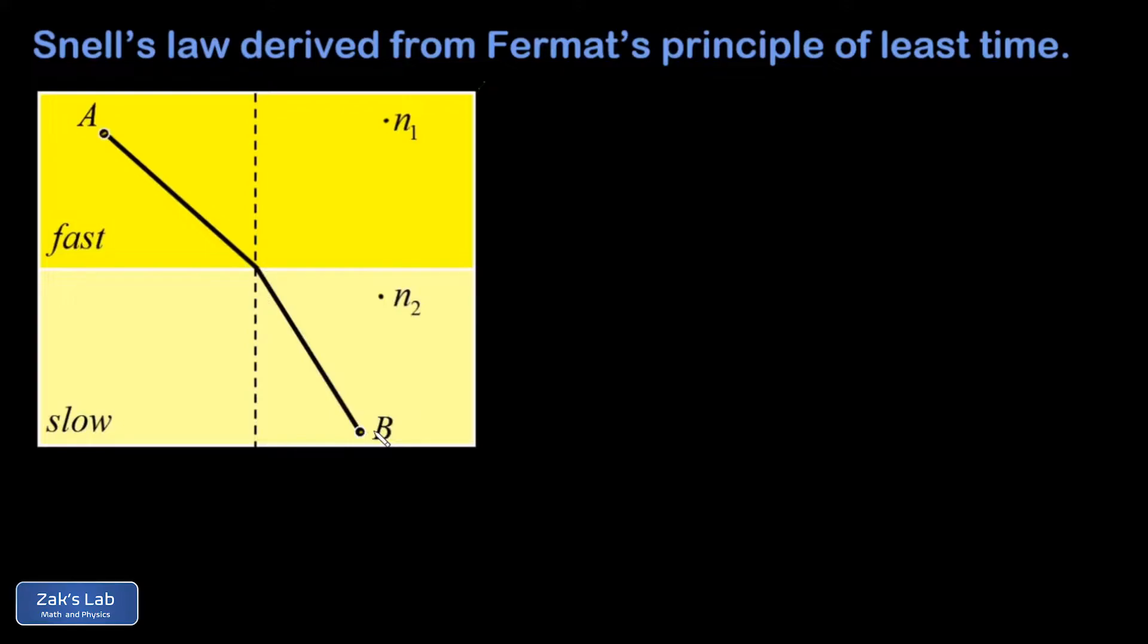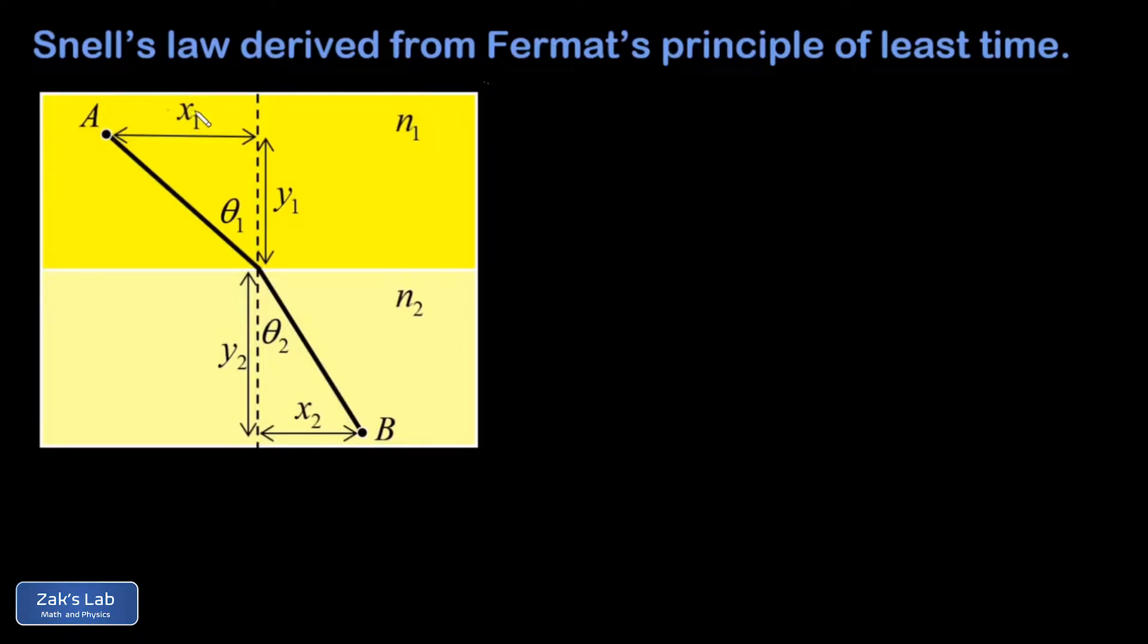To start to get a grip on what to do here, we're going to label this thing up. We've labeled the horizontal travel distance within the faster material as x1, we went ahead and put the angle in here with respect to the normal theta 1, the vertical travel distance y1. And we did the same thing in the slower material.